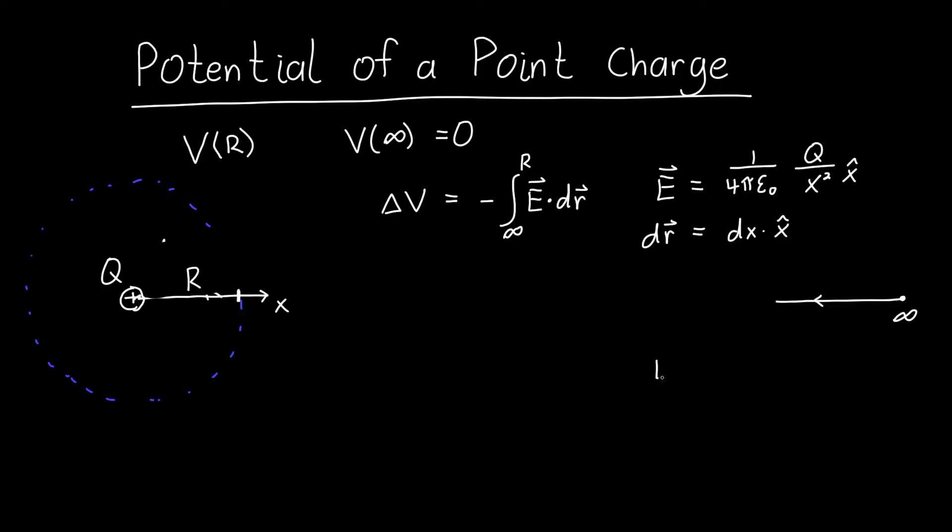Now if we take the dot product between these two E dotted with dr because they're both pointing in the same direction the two x-hats cancel out and just give us 1 and this becomes 1 over 4π epsilon naught times Q over x squared dx. And so this is what we're integrating.